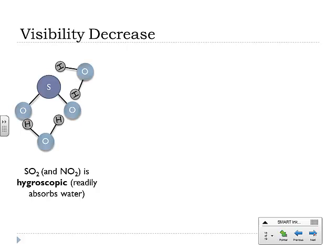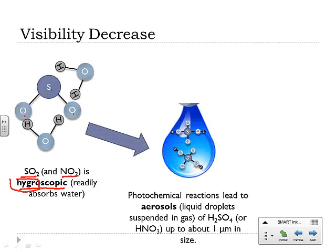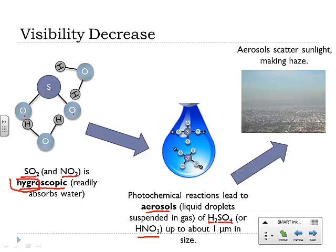What about visibility decrease? Why does acid rain make it harder to see? SO2 and NO2 are both hygroscopic — hygro has to do with water, and scopic means absorbed. SO2 really readily absorbs water; water sticks to it very easily. Eventually you get aerosols — liquid droplets of H2SO4 or nitric acid suspended in gas, about one micrometer in size. These aerosols scatter sunlight: sunlight bounces off and around them rather than passing through, causing light to look hazy to your eyes and creating haze.